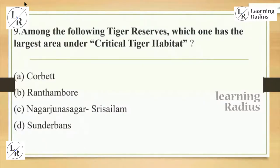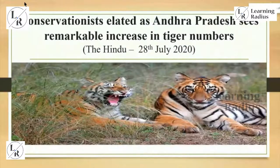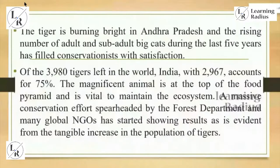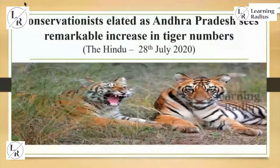Nagarjuna Sagar–Srisailam was in discussion. UPSC asked: among the following tiger reserves, which one has the largest area under critical tiger habitat — Corbett, Ranthambore, Nagarjuna Sagar–Srisailam, or Sundarbans? There was discussion in the Hindu on 28 July 2020: 'Conservationists elated as Andhra Pradesh sees remarkable increase in tiger numbers.' The article 'Tigers are burning bright in Andhra Pradesh' discussed the rising number of adult and sub-adult big cats over the last five years. Nagarjuna Sagar–Srisailam tiger reserve is the largest in the country and has the highest number of big cats on the rise. UPSC asked a question directly from this July 2020 discussion.